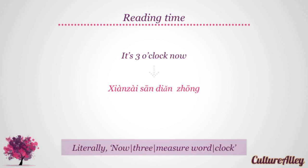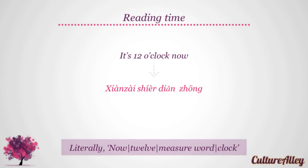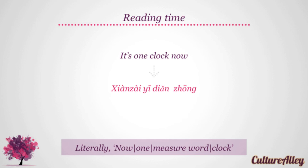It's twelve o'clock now will become xiàn zài shí èr dien zhōng, literally implying 'now twelve measure word clock'. It's one o'clock now becomes xiàn zài yī dien zhōng, literally meaning 'now one measure word clock'.